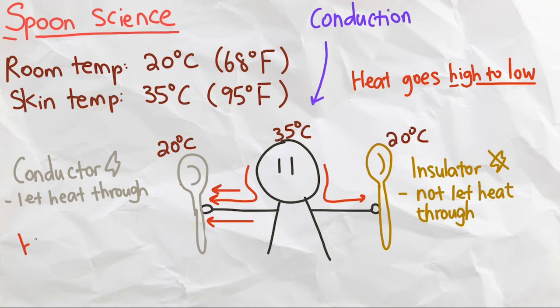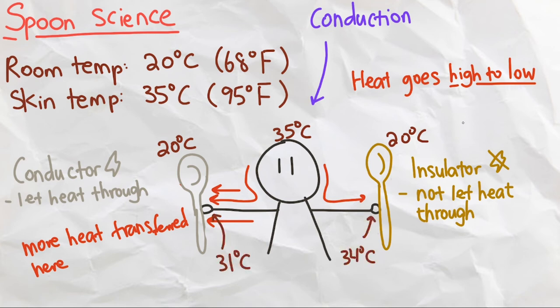So, when we touch a metal spoon, more heat is transferred to the spoon because it is easier to transfer through metal than wood. This drops our hand's heat more than the wooden spoon, which tells our brain that the metal spoon is colder, since the metal spoon took more heat away than the wooden spoon.